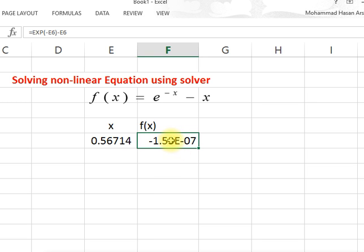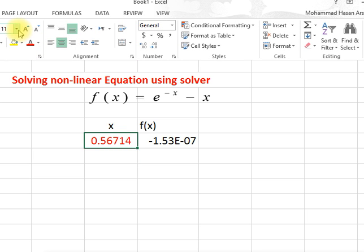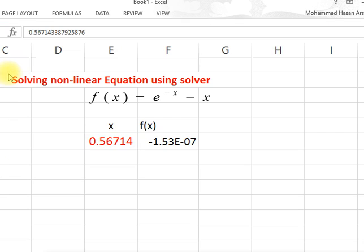Here it is making almost 0. This is a numerical technique. It is making 10 to the power -7, which is almost 0, and this is the value of x - this is the answer. This is the root of the function.